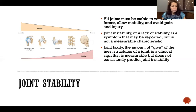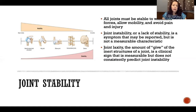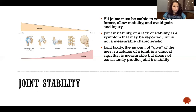Sometimes joint laxity predicts joint instability, or they happen at the same time, but that is not always true. We can have an unstable joint that is lax or not lax, and we can have joint laxity and still have a very stable joint. Somebody might be very hypermobile but still have very stable joints that are able to perform all the tasks the joints need to perform. Joint laxity and joint instability are two separate characteristics.